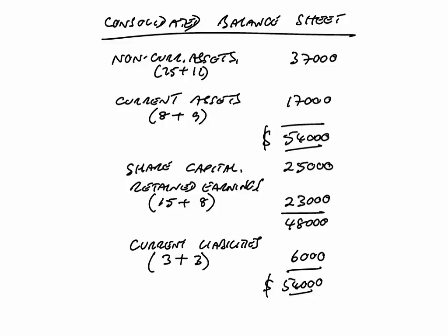Example 2 covers pre-acquisition profits. P acquired 100% of the share capital of S, buying all the shares on 1st January 2006. They paid 28,000. But this time S already existed — unlike the previous example where we bought shares on the day the company was formed. Here S has already been in business and earning money. It says they had retained earnings of 8,000 at that point. Then P bought 100%.